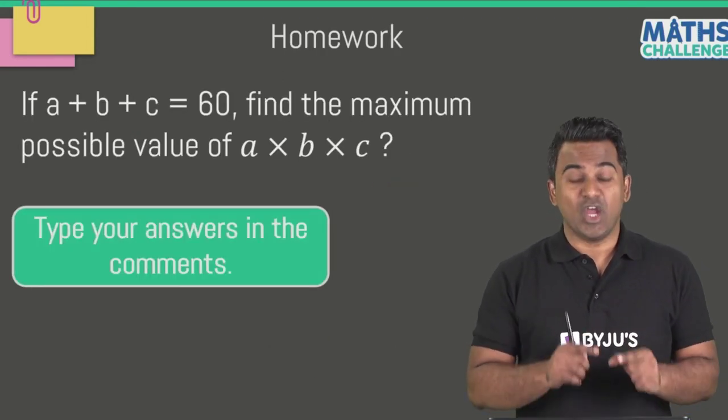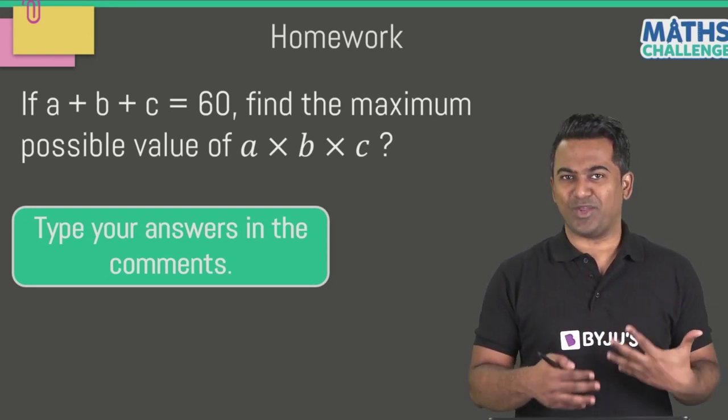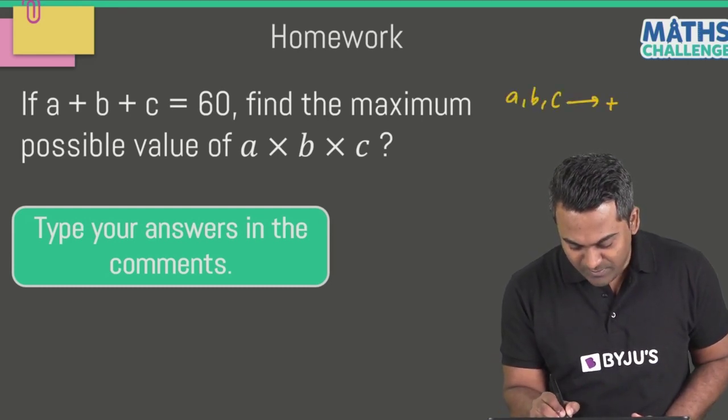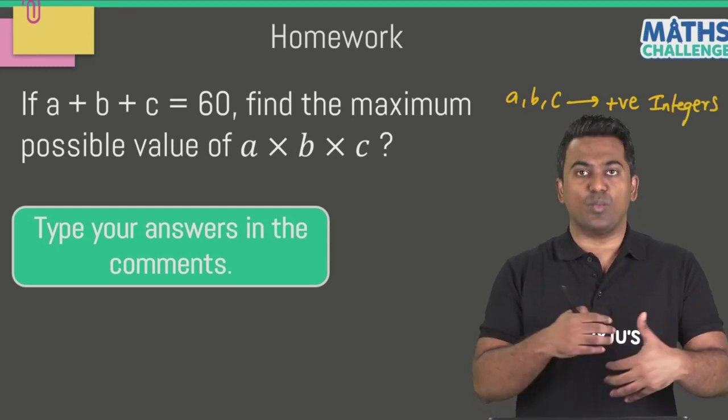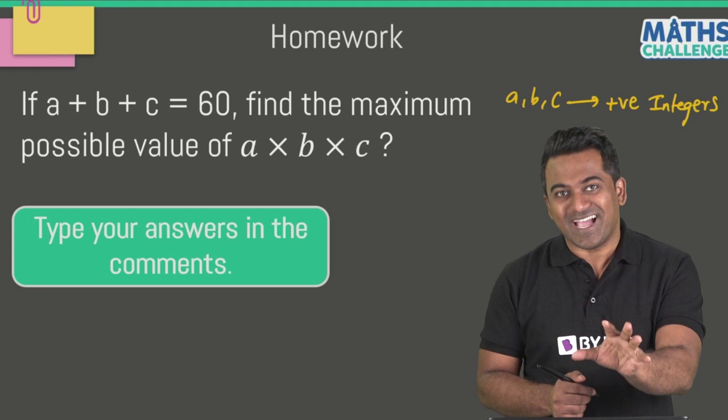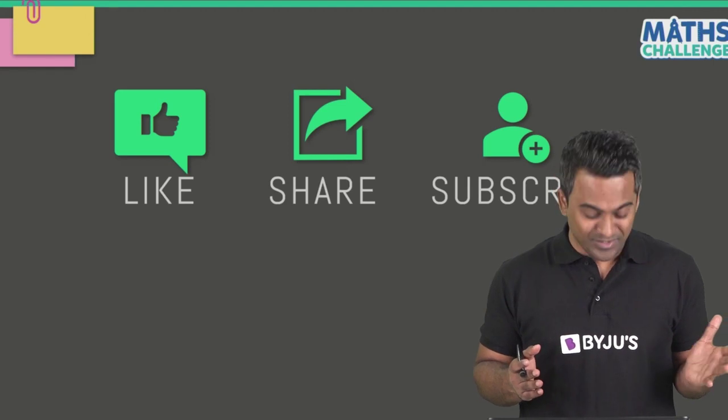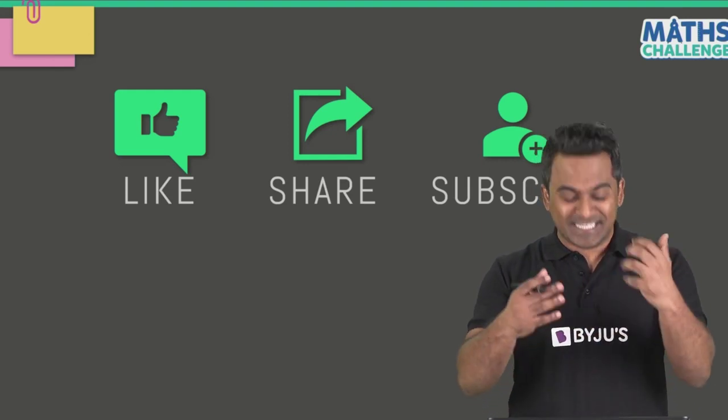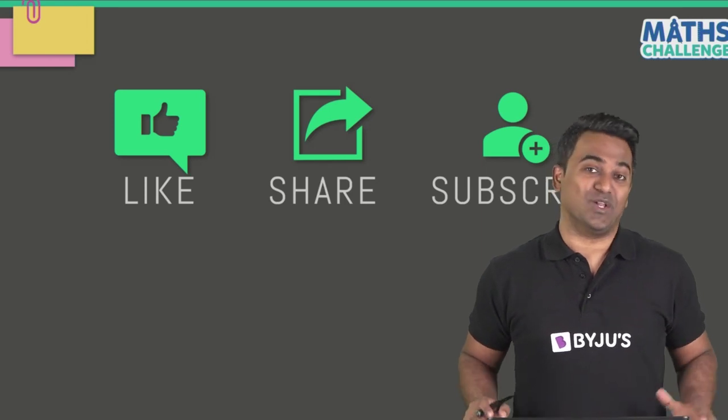Now if A plus B plus C is equal to 60, you have got to figure out the maximum possible value of A multiplied with B multiplied with C. I'm going to make your job a little simpler by also telling you that A, B, and C can only be positive integers - 1, 2, 3, 4, 5 and so on. Let me know the answer in the comments box. If you liked this question, make sure you hit that like button, share it with your friends. This was a fairly challenging business school entrance exam question. And lastly, if you still haven't subscribed, make sure you subscribe to the channel. Thank you for your time and bye-bye.